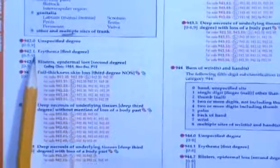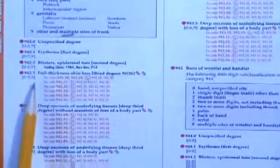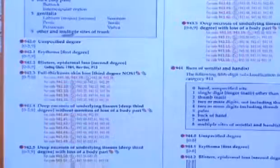0.0 means unspecified degree, 0.1 is first degree, 0.2 is second degree, 0.3 is third degree, 0.4 is deep third degree and 0.5 is deep third with the loss of body part. So that's always the same. The fourth digit for ICD-9 is the depth of the burn.